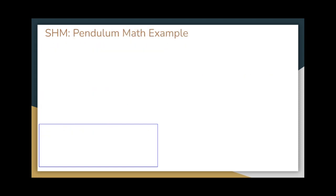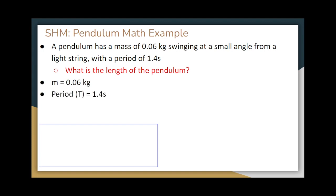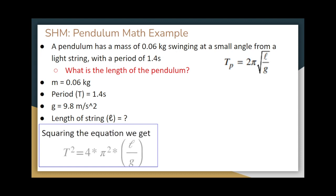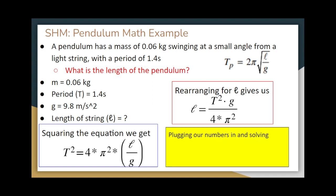A pendulum has a mass of 0.06 kilograms swinging at a small angle with a period of 1.4 seconds. We want to find the length of the pendulum, assuming g equals 9.8 meters per second squared. Starting with T_p equals 2 pi times the square root of L over g, we square both sides to get T squared equals 4 pi squared times L over g, then rearrange to get L equals T squared times g divided by 4 pi squared. Plugging in the values, L equals 0.49 meters.